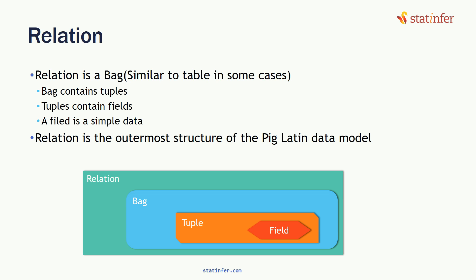A relation is the outermost structure in the Pig Latin script data model. Pig Latin is known as a data flow language. Pig has certain data types: relation is a type of bag; a bag contains tuples; tuples contain fields. Certain tuples together make a bag, and that bag is a kind of subset of the overall relation. So a bag of bags forms the relation — a relation may contain many bags.